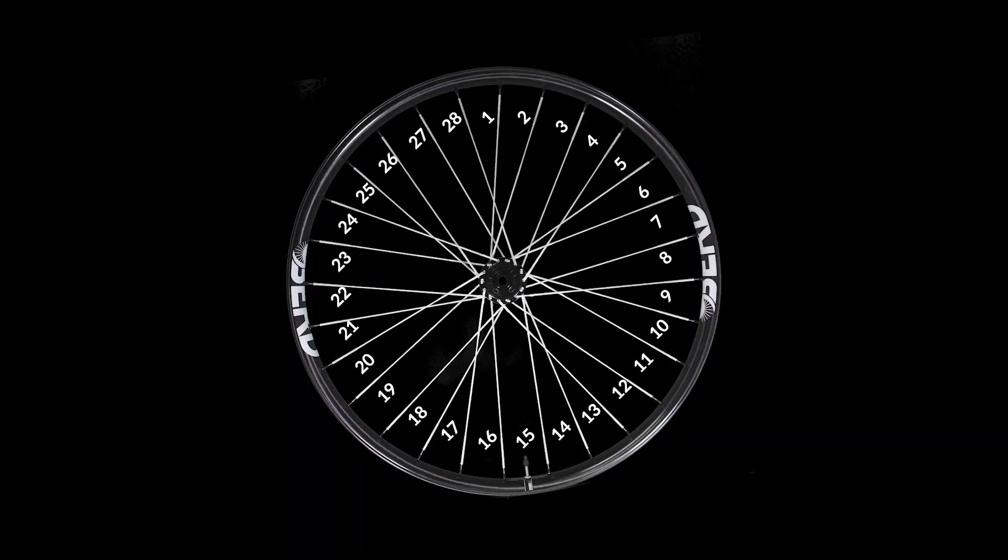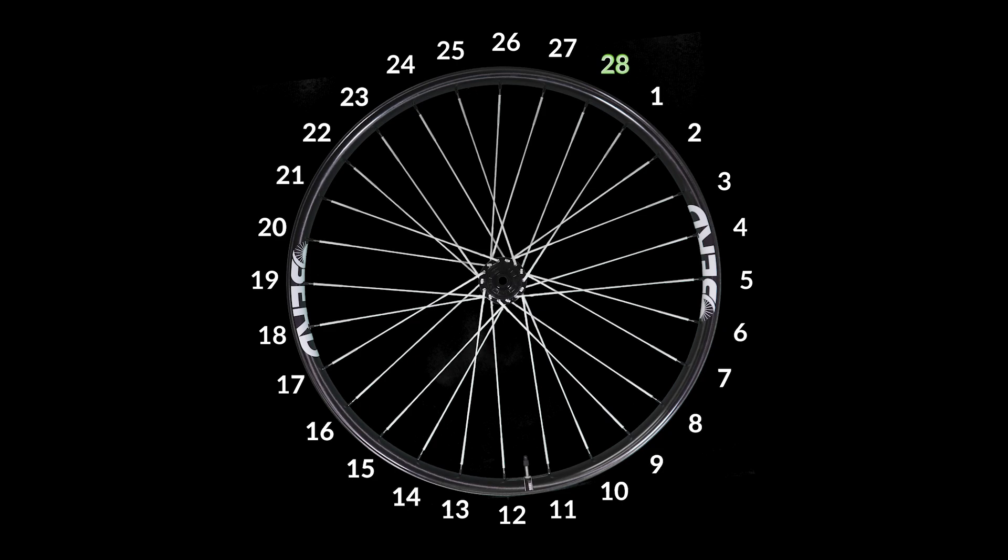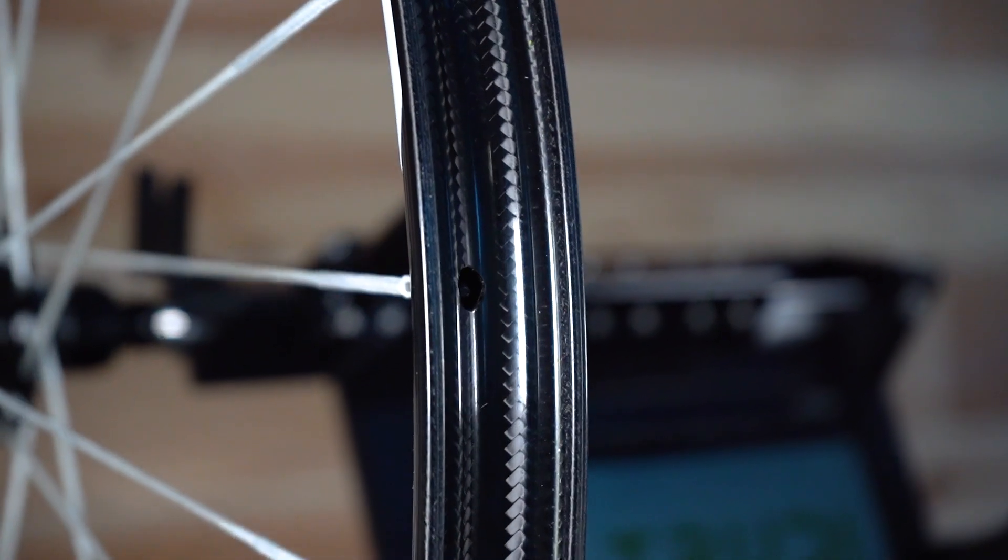Second, number of spokes. This is critical for accurate calibration. And third, rim type. Either carbon fiber or aluminum.